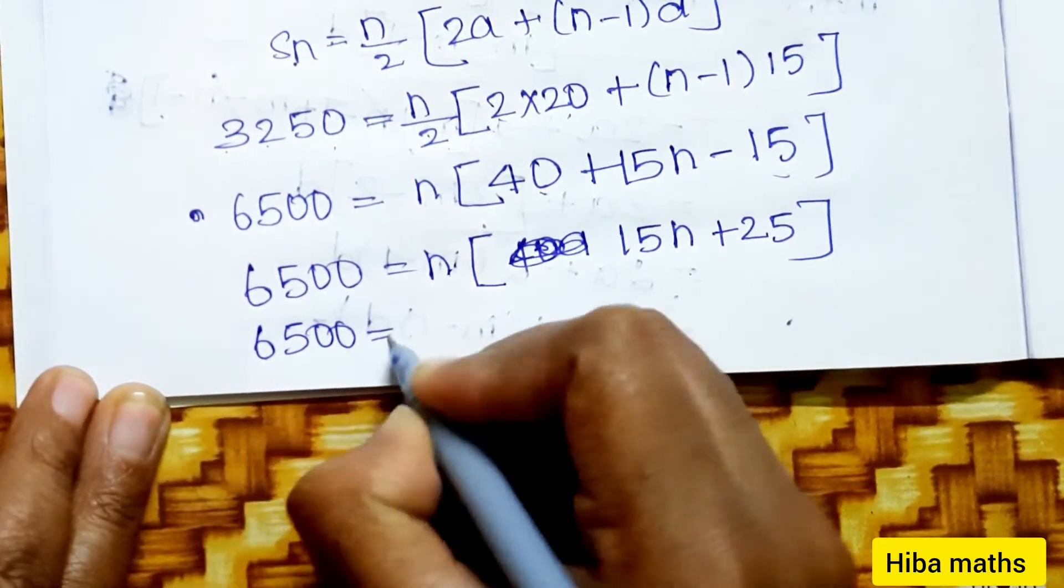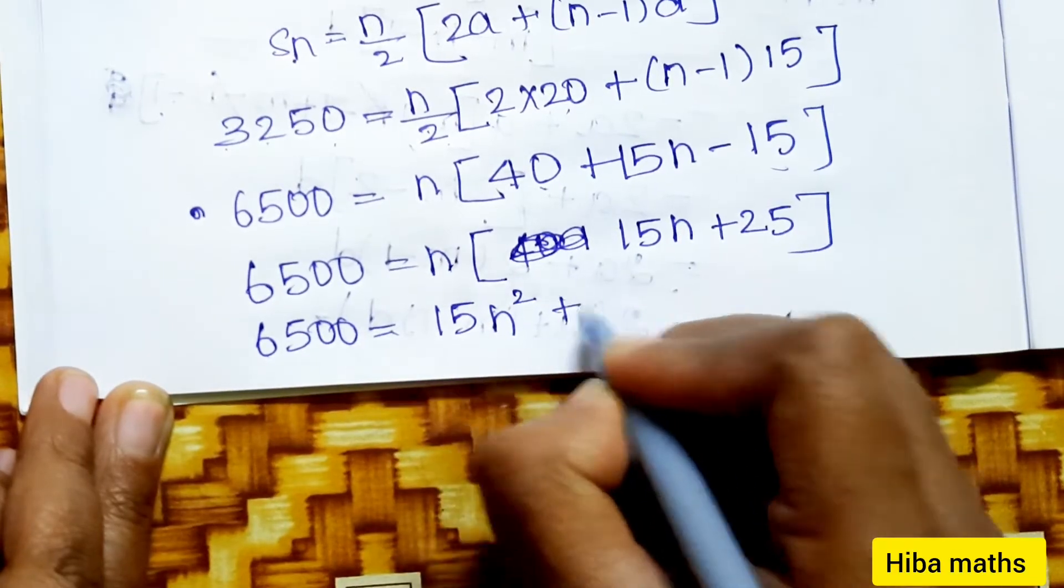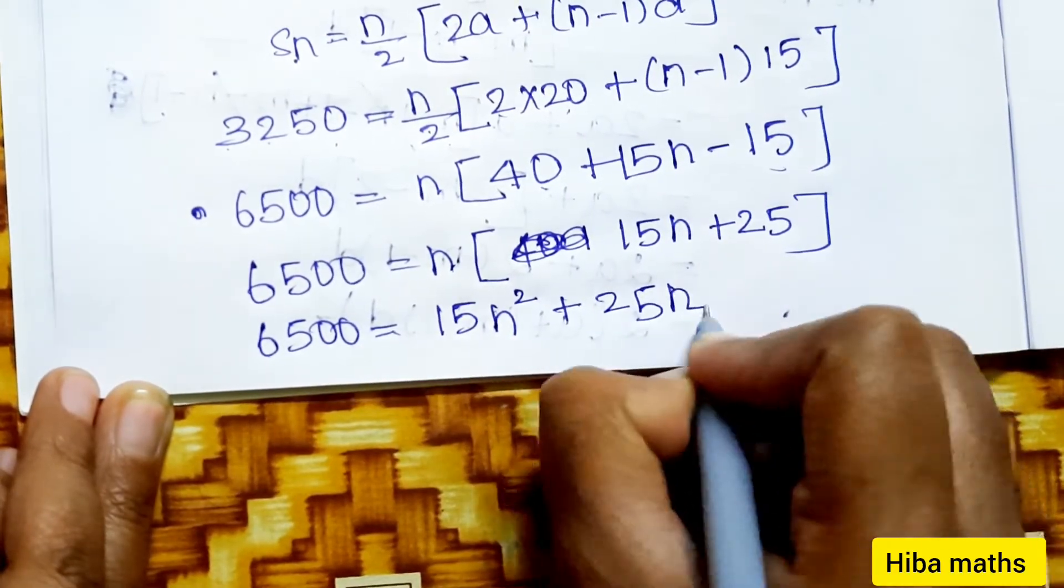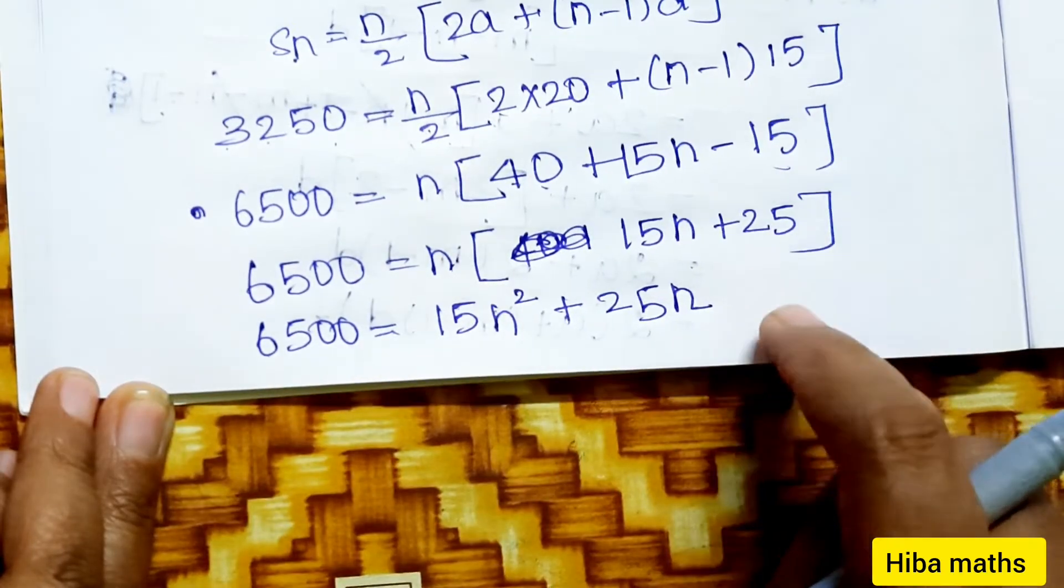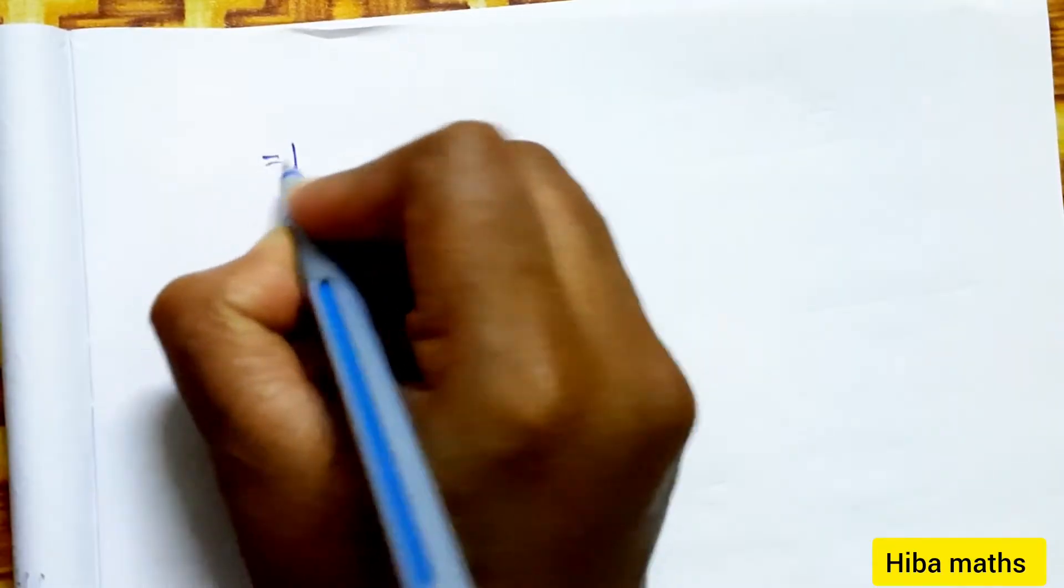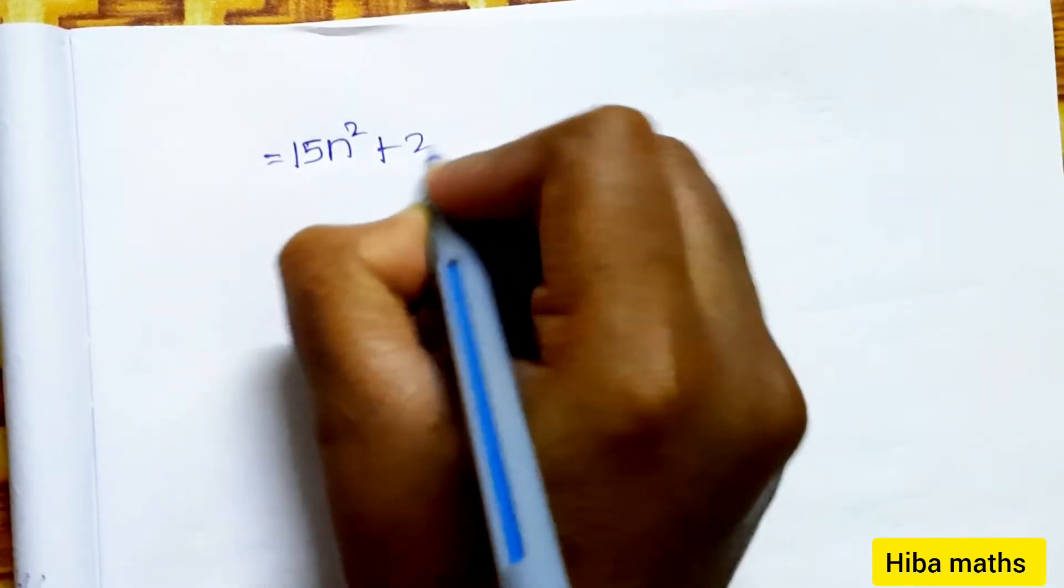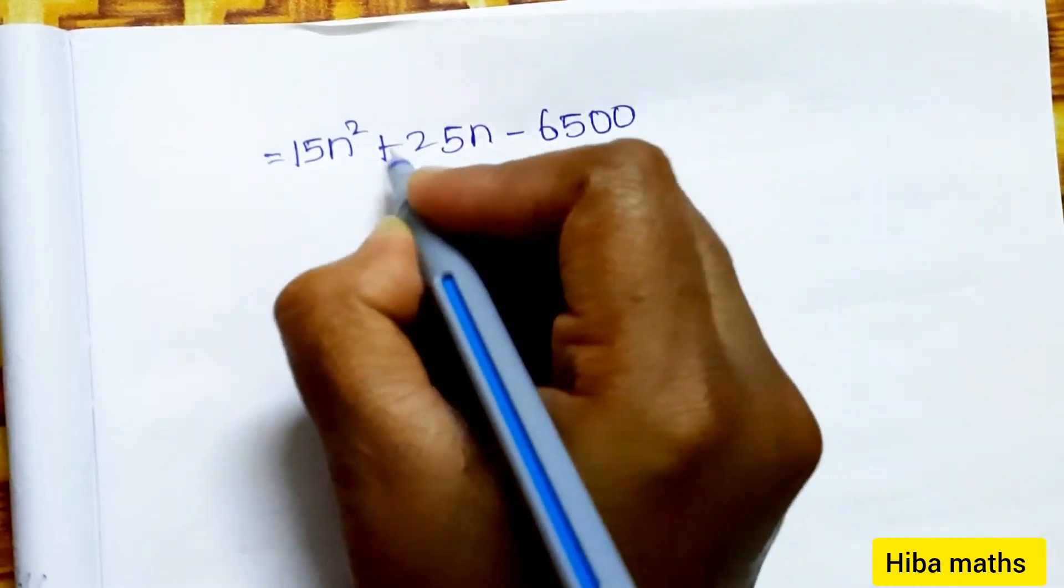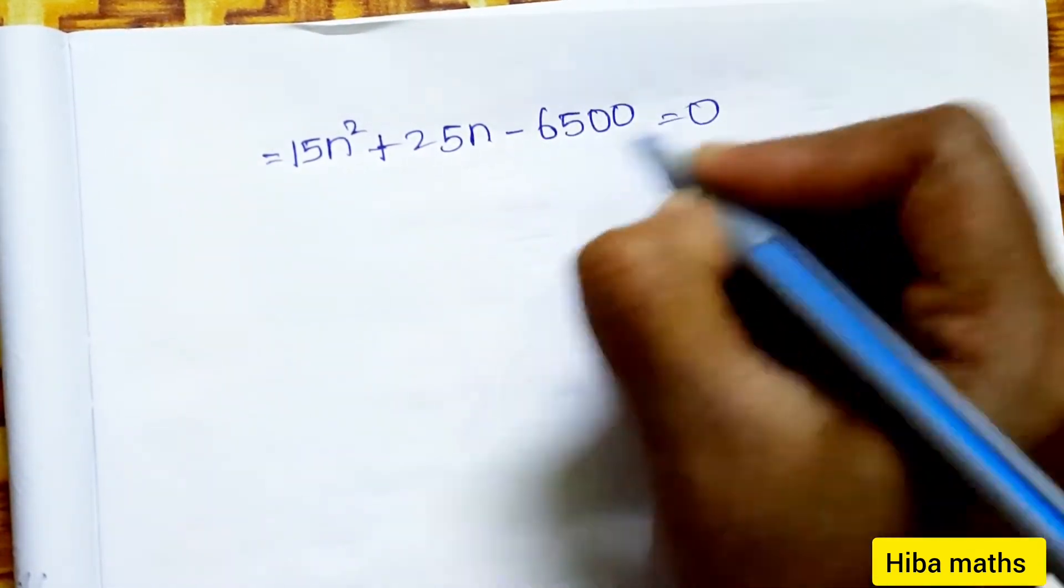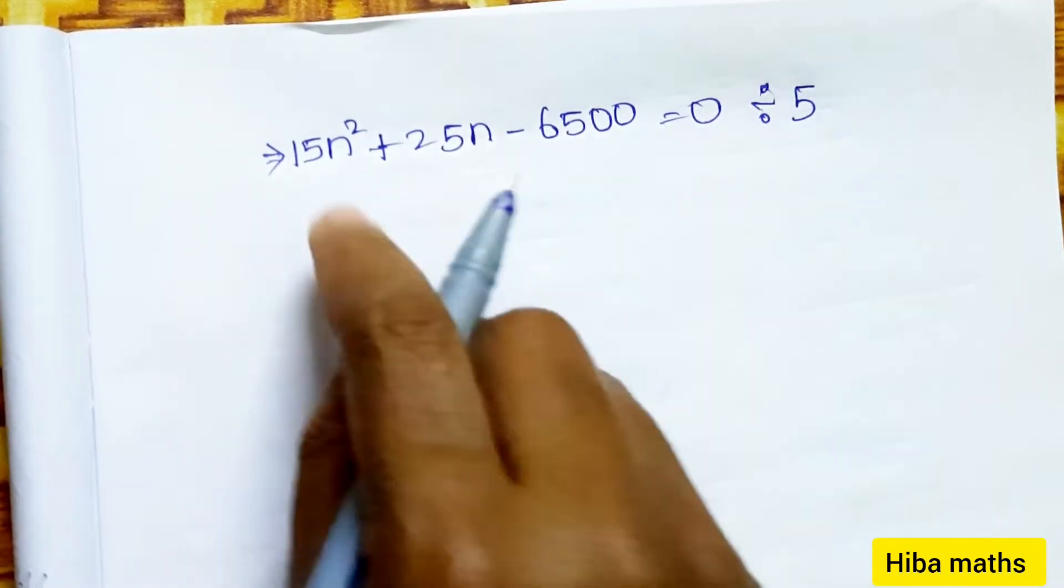Simplifying, 6500 = n[2(20) + (n-1)(15)]. This becomes 6500 = n[40 + 15n - 15]. So 6500 = 15n² + 25n - 6500 = 0.